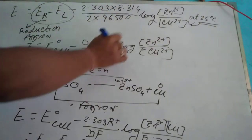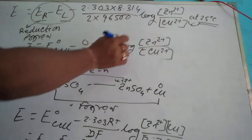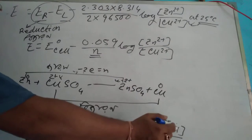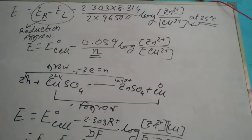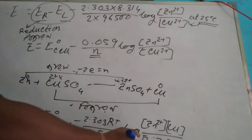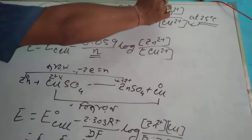Cu²⁺ is in a solid state at 100% concentration. You can see that this value is zero.